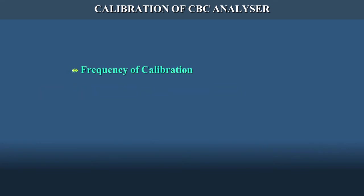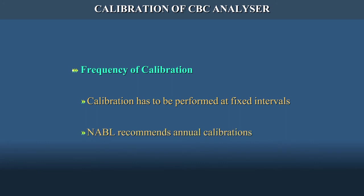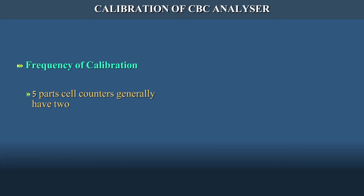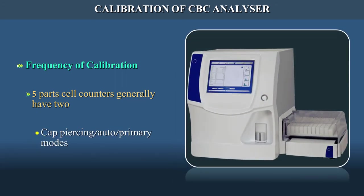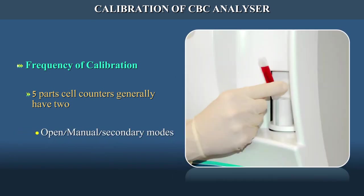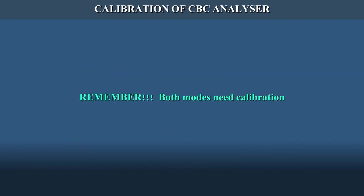Frequency of calibration: calibration has to be performed at fixed intervals. NABL recommends annual calibrations; however, in older equipment it should be more frequent. Five-part cell counters generally have two modes: cap-piercing or auto or primary mode, and open or manual or secondary mode. Depending upon how many modes your machine has, remember that both modes need calibration.